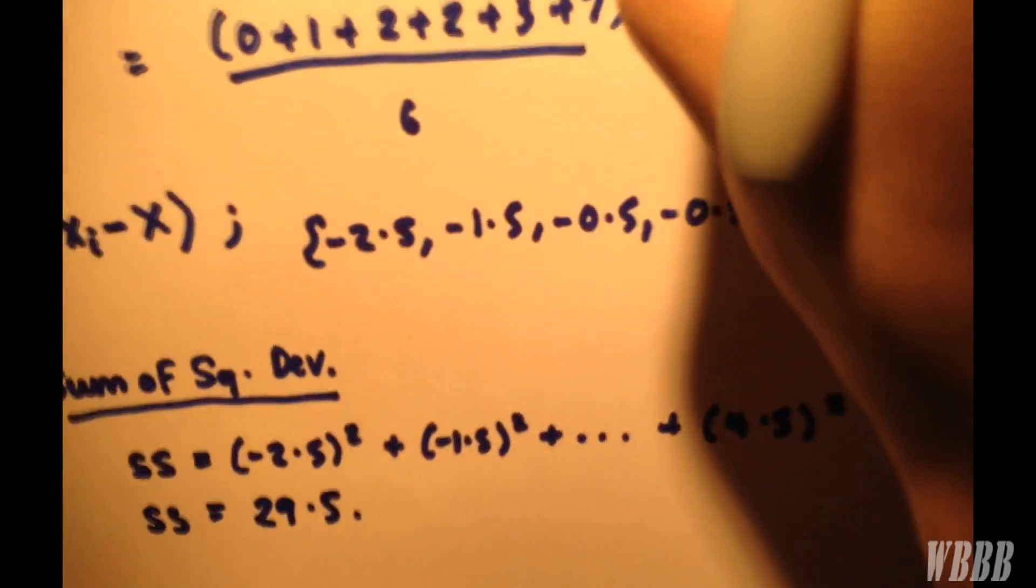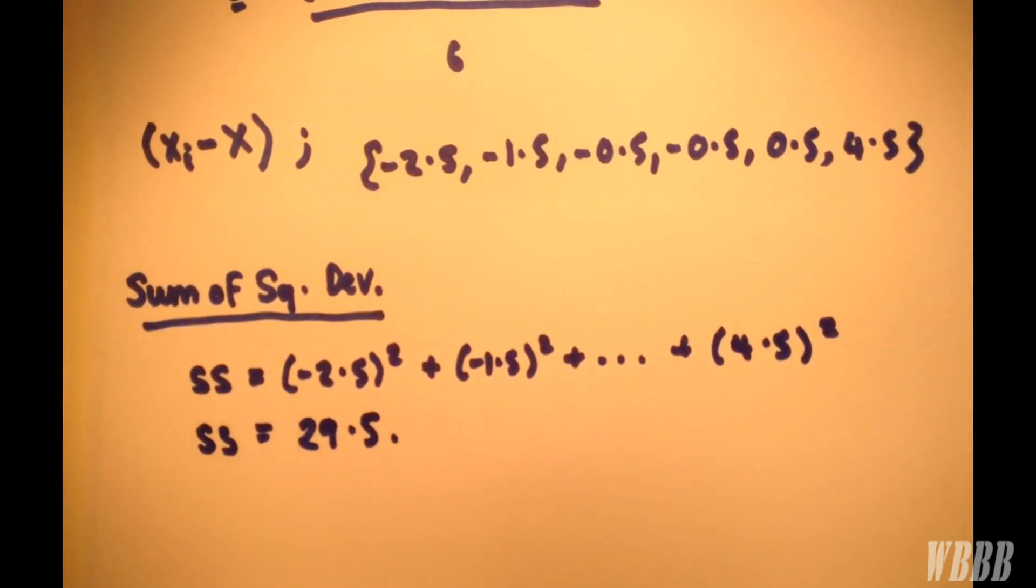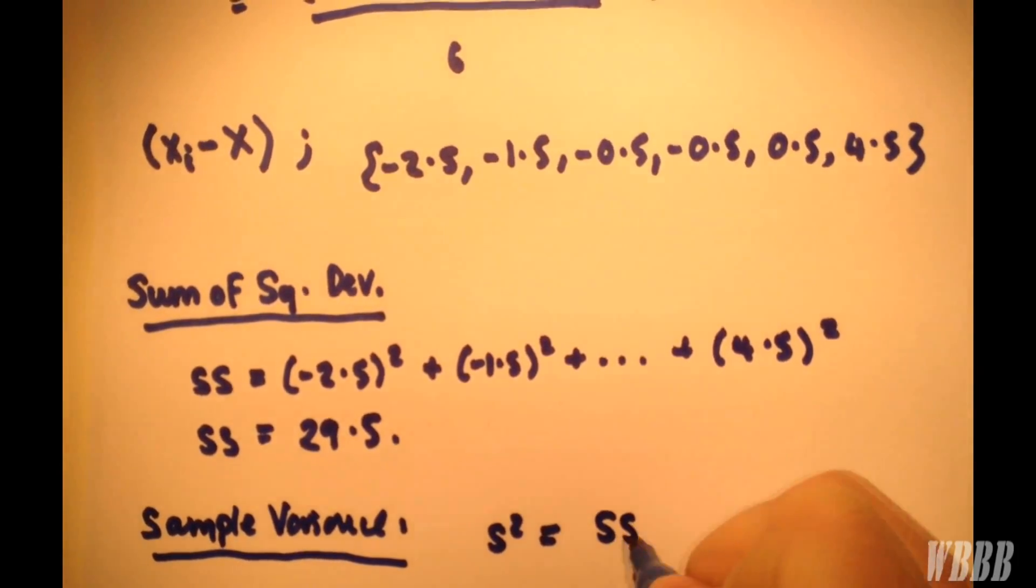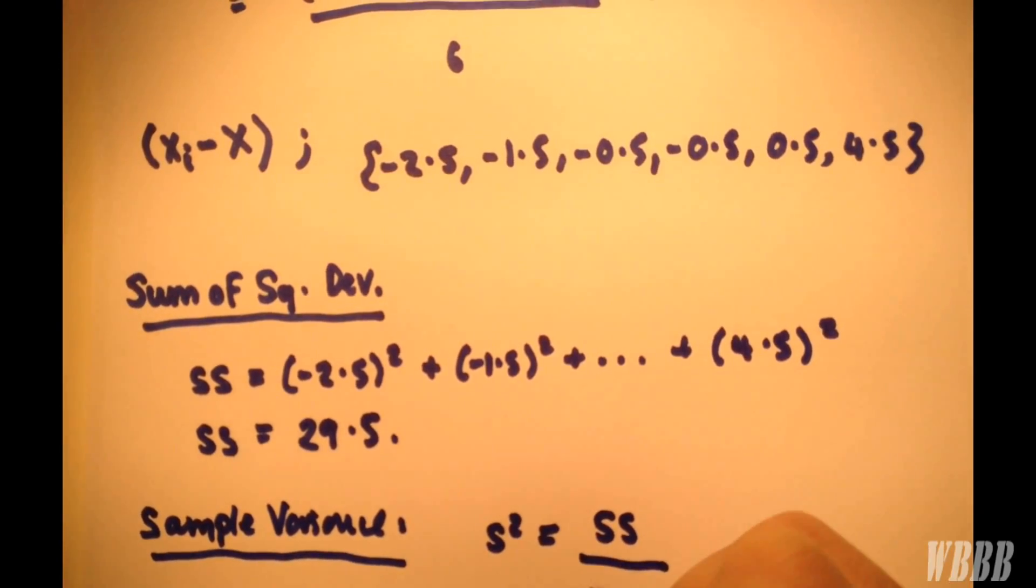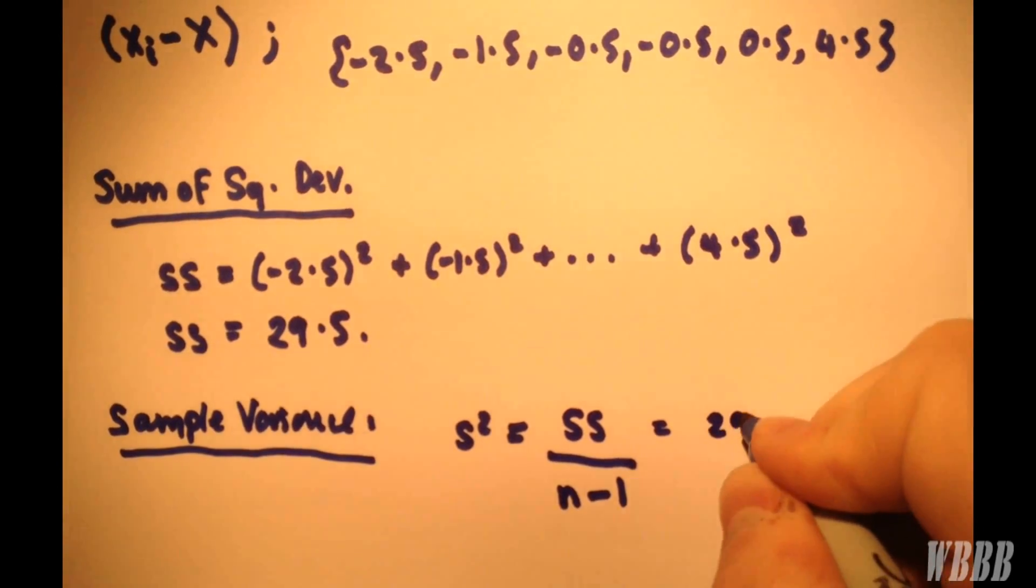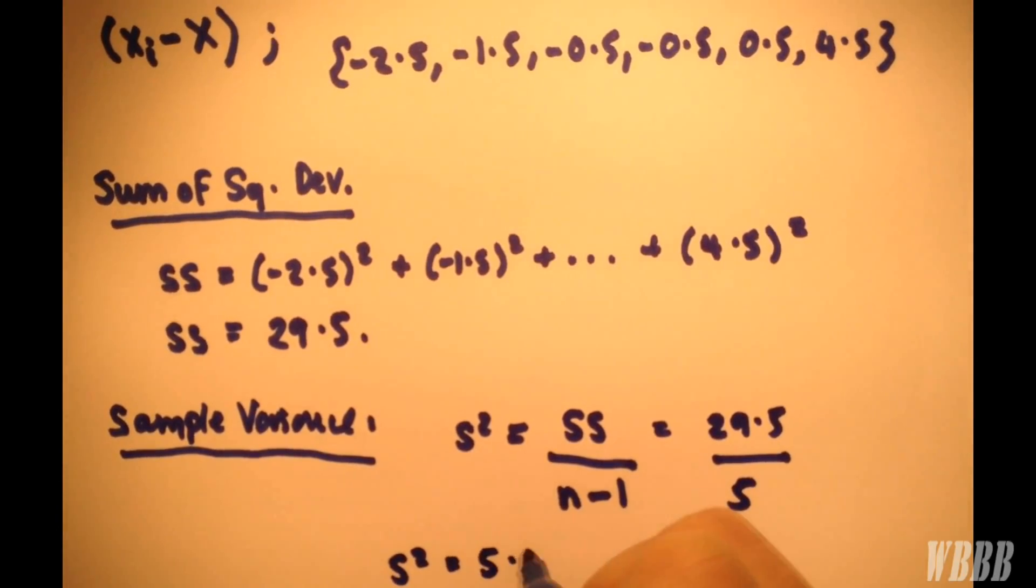And what's fantastic now is from calculating the sum of squared deviations, we can actually find the sample variance. The sample variance is very simple to calculate here. So s² equals sum of squared deviations divided by n minus 1. So we have 29.5 divided by 6 minus 1, which is 5. So our sample variance is 5.9.